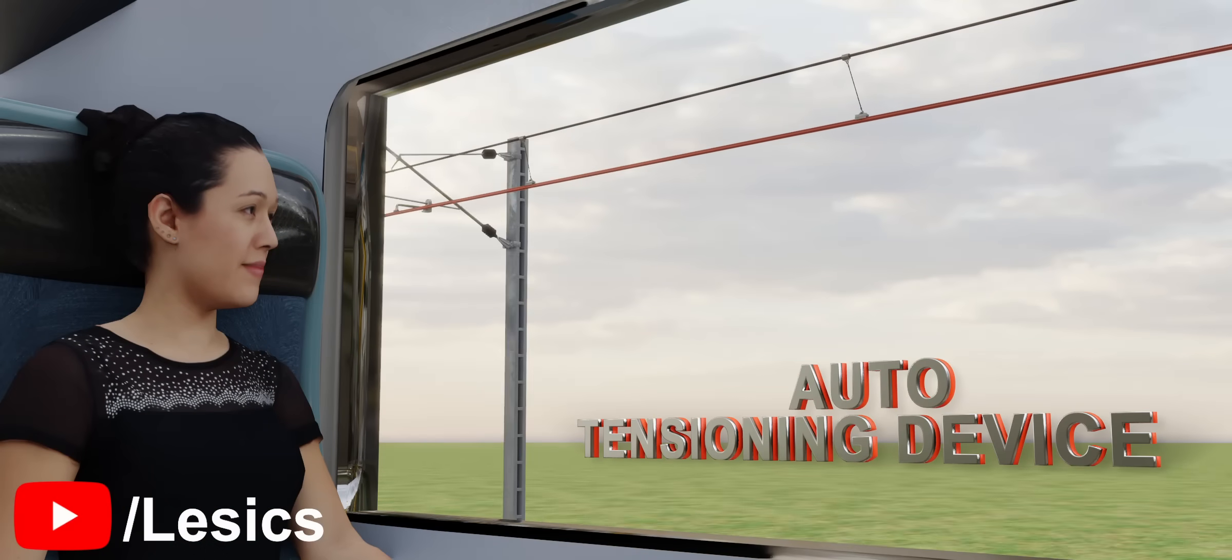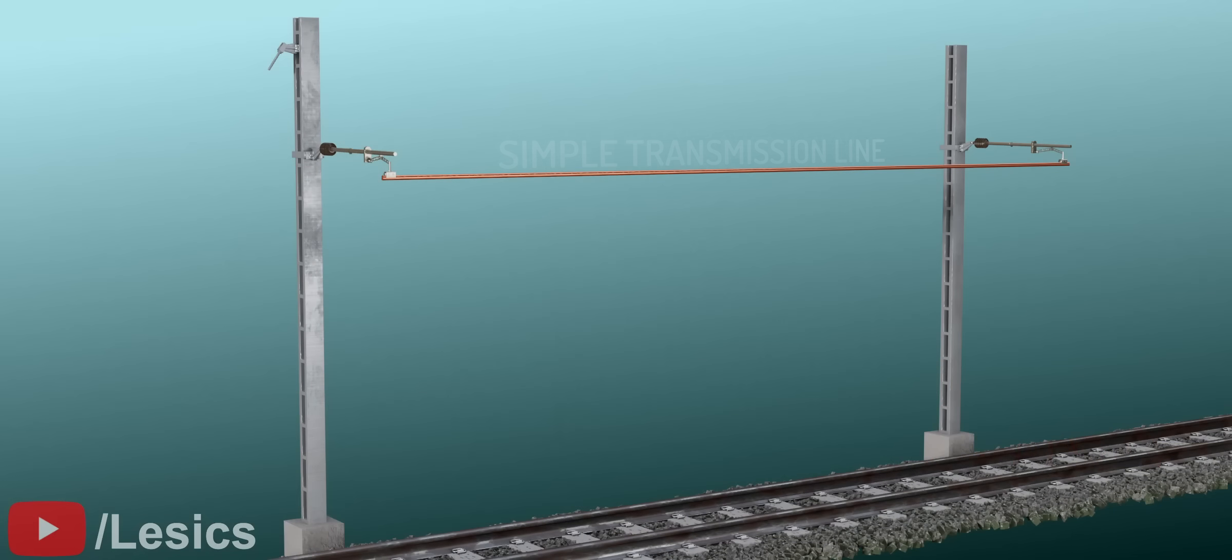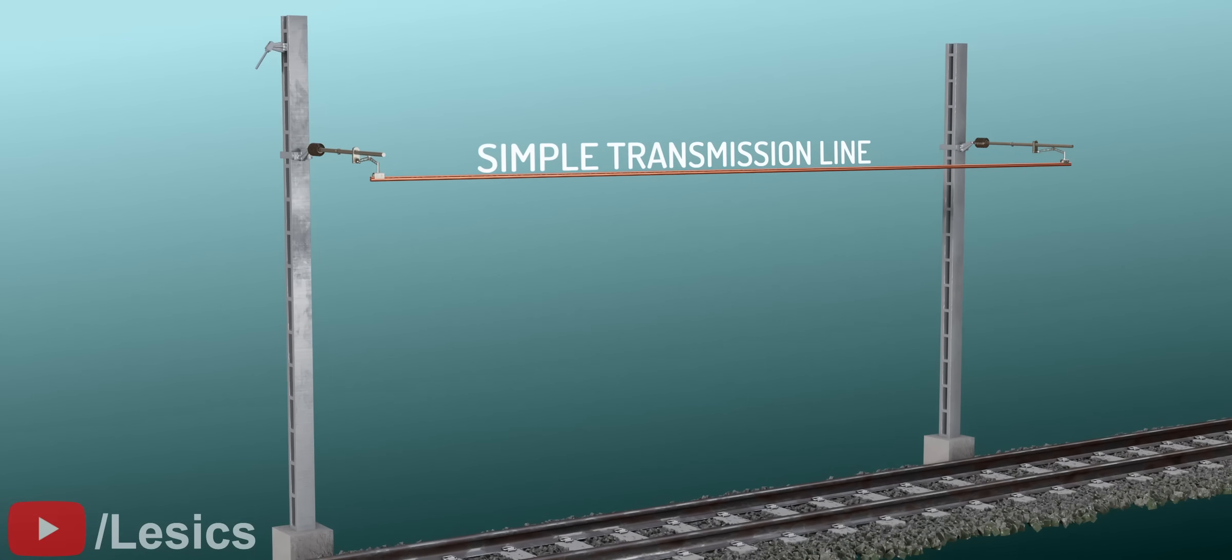Whenever you travel in a train, you might have seen these hanging weights near the poles and a strange connection of wires near to them. What exactly are they? Why couldn't they just use a simple conductive wire arrangement similar to the normal power transmission system? Let's explore this topic.